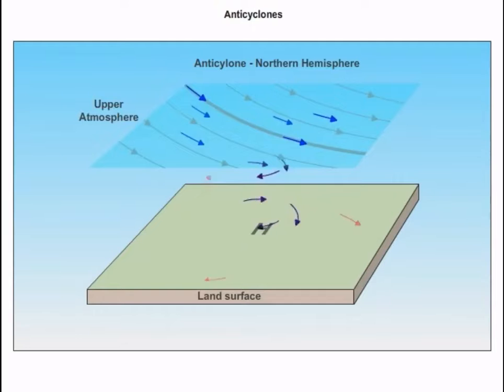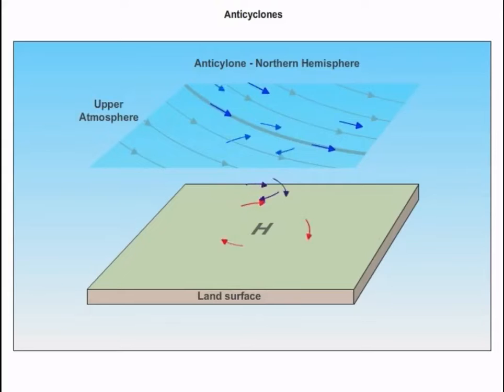As the air sinks, it gets compressed and heats up. The relative humidity drops. Clouds typically evaporate. So high pressure is associated with sunny skies, while low pressure and rising air are associated with storms.